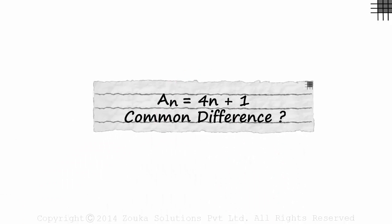The sequence A is defined using this formula: An is equal to 4n plus 1. And we have been asked for the common difference of this sequence. You get a maximum of 5 seconds to answer this question.